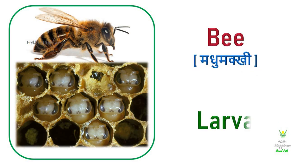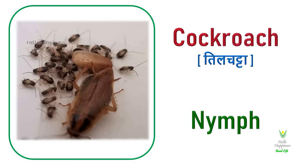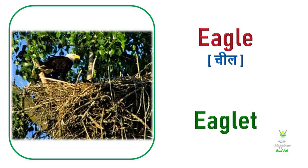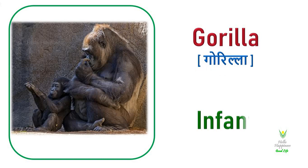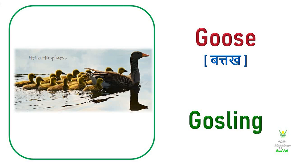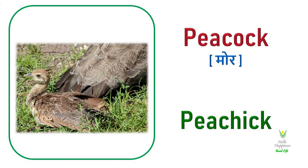Bee. Bee's young one is called a Larva. Cockroach. Cockroach's young one is called a Nymph. Eagle. Eagle's young one is called an Eaglet. Gorilla. Gorilla's young one is called an Infant. Goose. Goose's young one is called a Gosling.